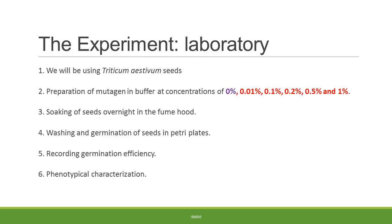One experiment you can consider performing in a laboratory involves the use of a seed which is rarely germinated and the use of a mutagen such as EMS prepared in a suitable buffer with varying concentrations. All of these experiments must be conducted in a fume hood with the use of suitable protective gear, as EMS is a chemical mutagen. Seeds must be soaked overnight in the mutagen, following which they will be washed and germinated, and germination efficiency recorded followed by phenotypical characterization.